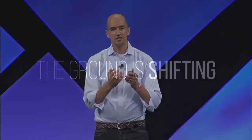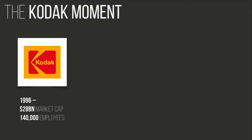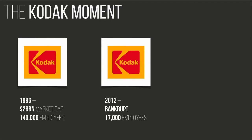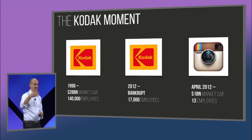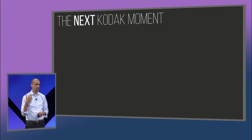The ground is shifting — you might know the Kodak moment. In 1996, Kodak was a $28 billion company with 140,000 employees, the leader in photography. Kodak invented the digital camera — that's the crazy thing. The camera had 0.5 megapixels and management said: who wants a blurry picture in a tiny camera when they can have film? Film will always be better. In 2012, Kodak went bankrupt with only 17,000 employees. That same year, Facebook bought Instagram — 13 employees, $1 billion acquisition. That is the Kodak moment: small agile teams that see the future and disrupt massive industries.